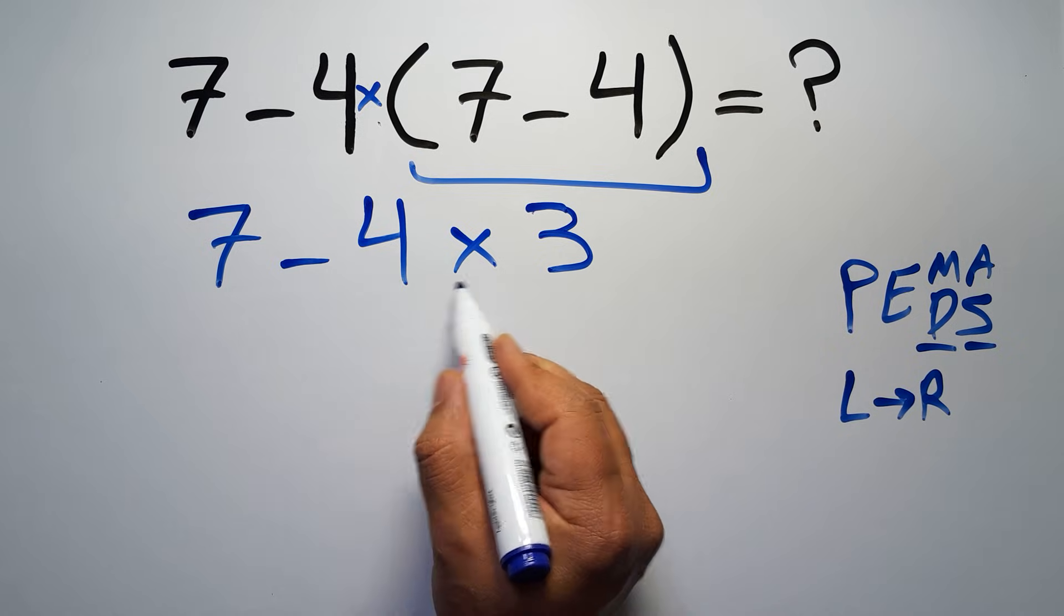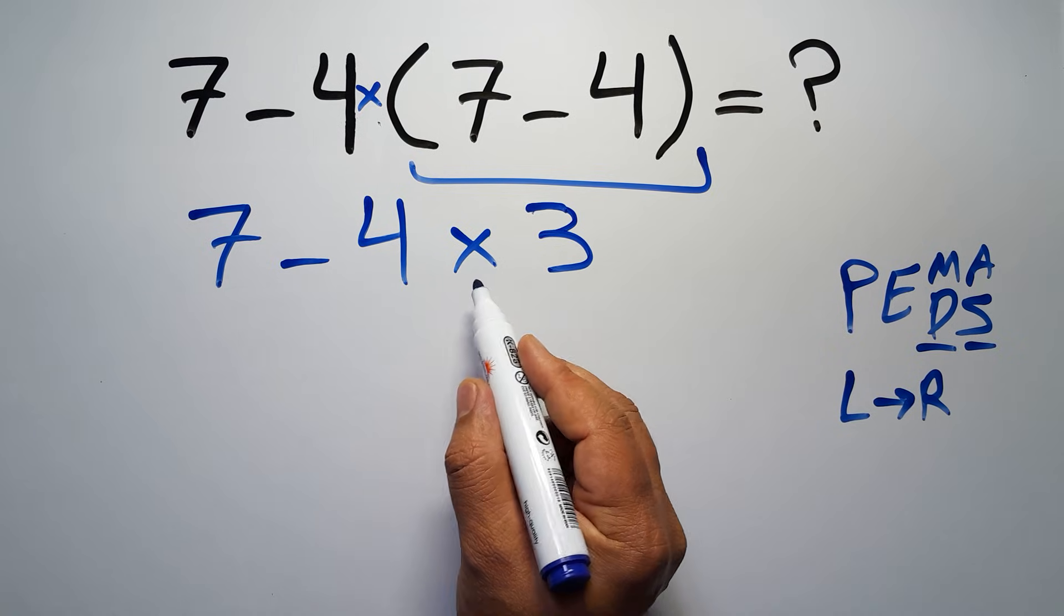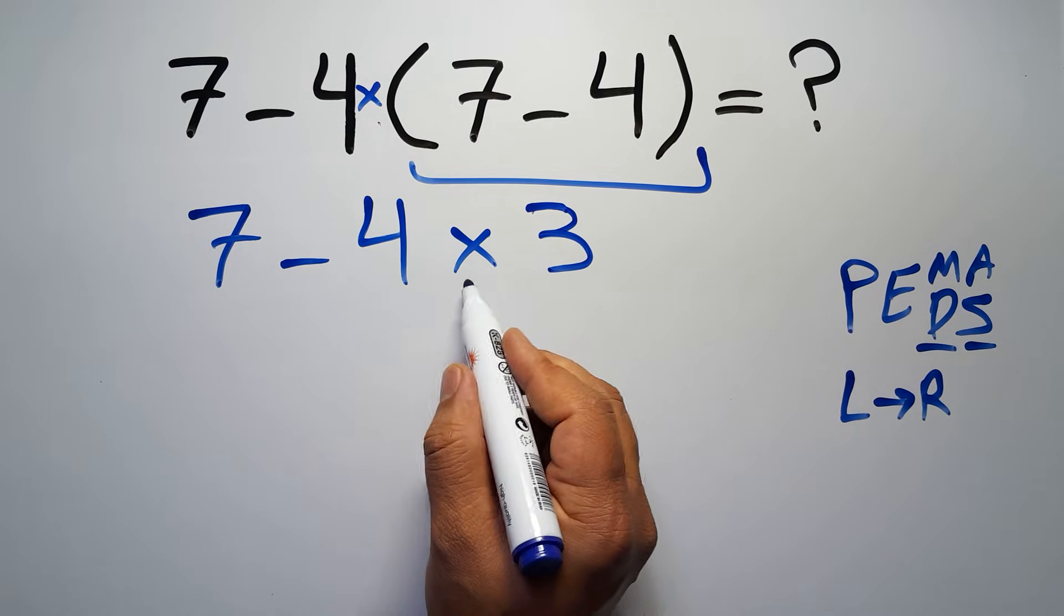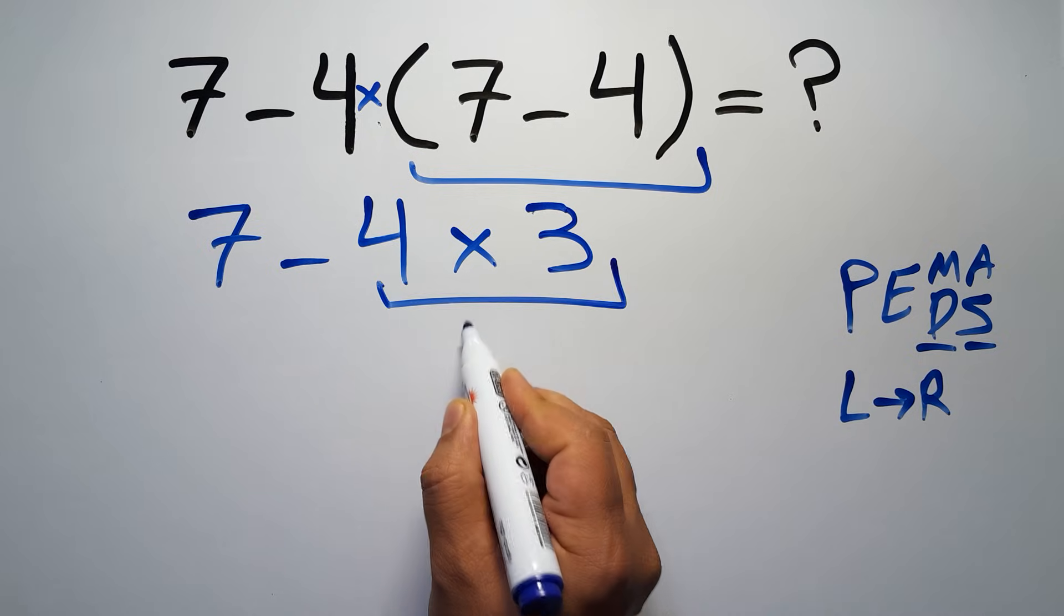Now we have one subtraction and one multiplication. According to the PEMDAS, multiplication has higher priority than subtraction, because multiplication comes before subtraction. So here, first we have to do this multiplication. 4 times 3 gives us 12.